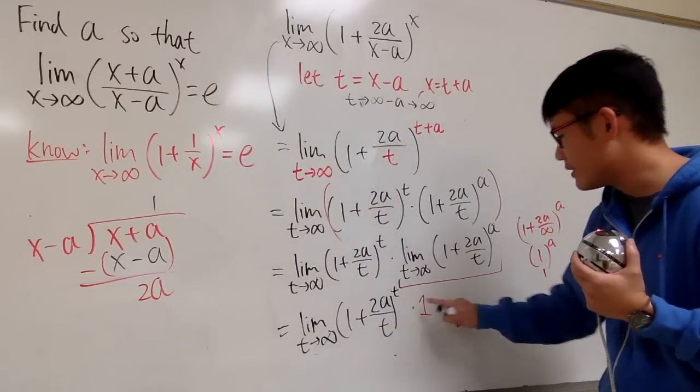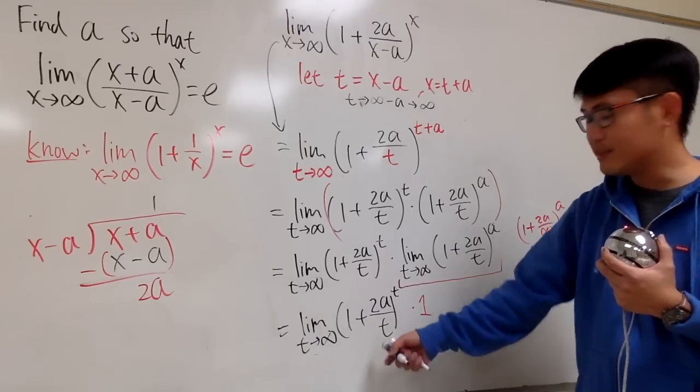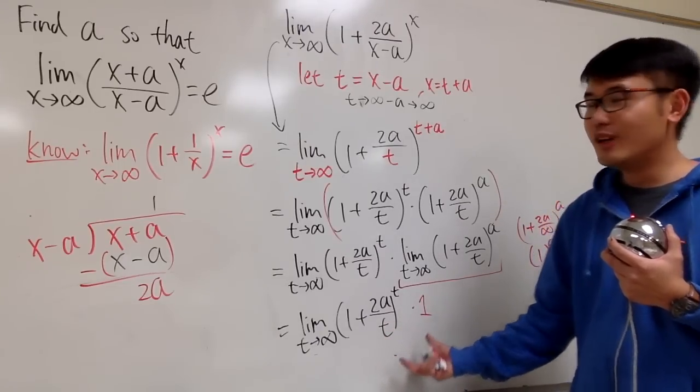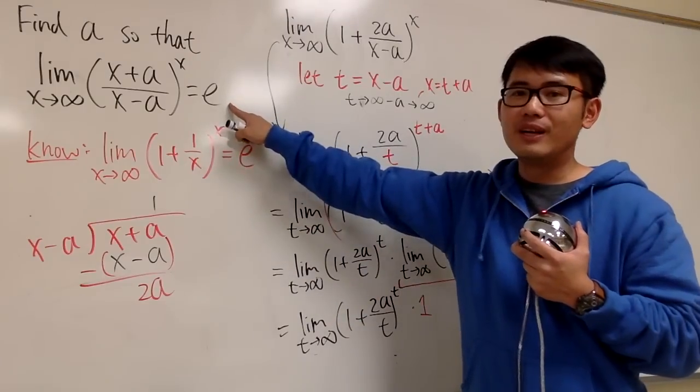And let me just write it one slightly closer to this, so that it looks better. 1 times this is just that, right? And what do we want this to be? We want this to be e. So, therefore, I want to set this to be e.